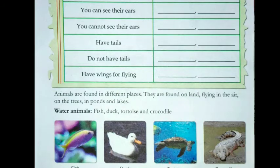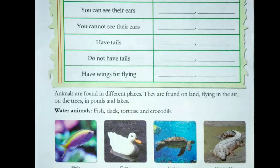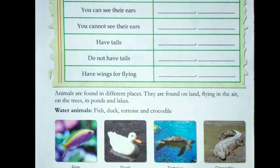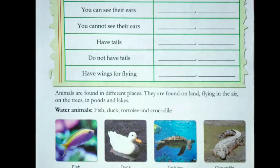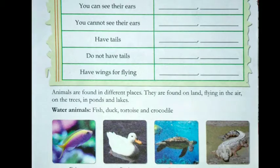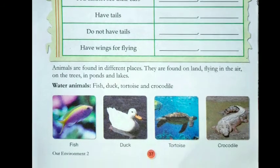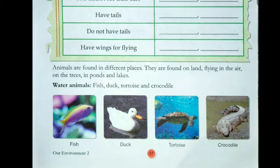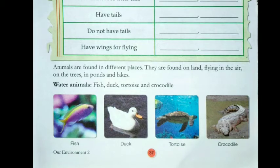Animals are found in different places — on land, flying in the air, on trees, and in ponds and lakes. Water animals are found in water; they live in water. Examples of water animals are fish, duck, tortoise, and crocodile.